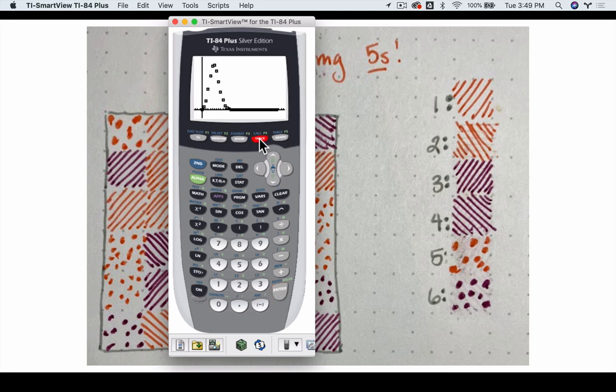So if I hit trace, I can quickly scroll through some of the key values on the list and see the different probabilities. Like here it says the probability of rolling exactly 8 fives is about 10.9%.